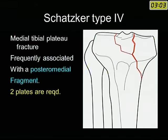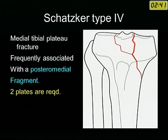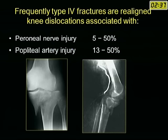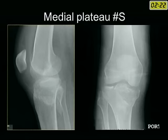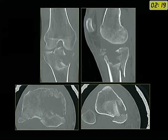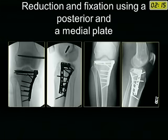Schatzker type 4 are medial tibial plateau fractures. Though they look simple, they can be dangerous because they often have a coronal split — a posteromedial fragment not accounted for in the original Schatzker classification. CT scans now identify these much better. These fractures require posteromedial buttressing and are frequently associated with vascular injuries, so beware of the displaced medial plateau. A femoral distractor can be of immense help. These will require reduction and fixation using two plates, not just one.